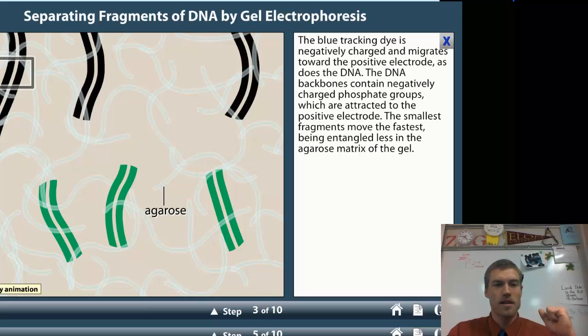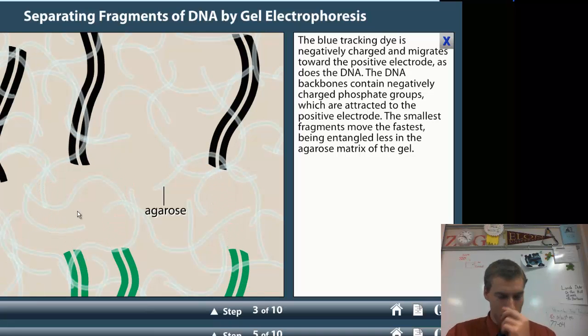The negative side is up here where the DNA started, that is going to repel the negatively charged DNA. Opposites are going to repel one another, so that's going to push it towards the positive side. Notice that the smaller DNA fragments are moving much faster. That's because they are able to move through the maze more quickly.